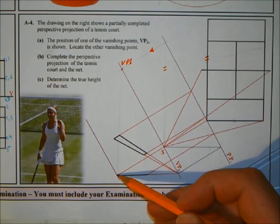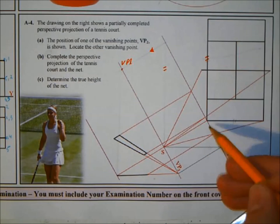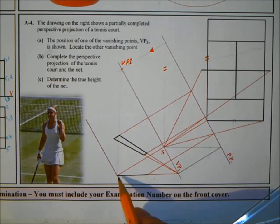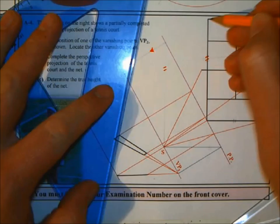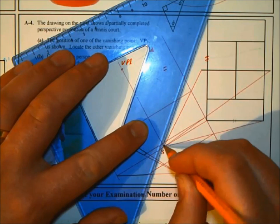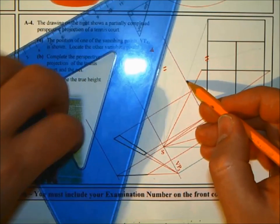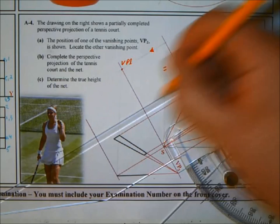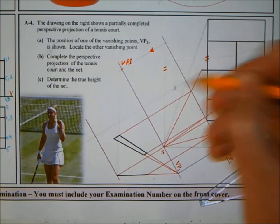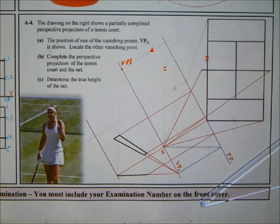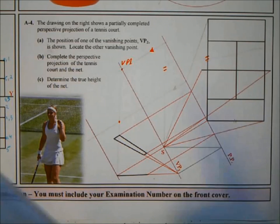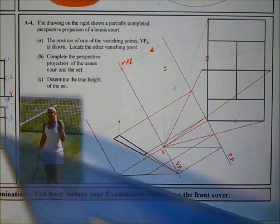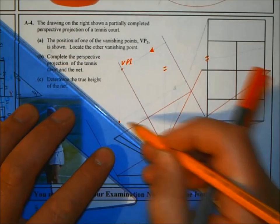To figure out where that line stops, I need the back corner. The front point goes off to the left and right — the right line is already done. For the left-hand side, join that point back to the spectator, where it crosses the picture plane — project that distance down. Where it crosses the line back to VP1, that is the point on the tennis court. To find the angle of the back of the court, join that back to VP2.